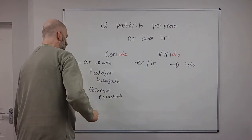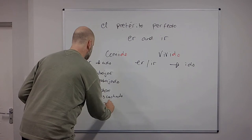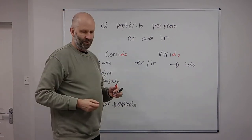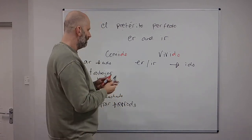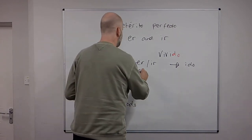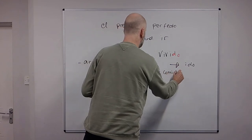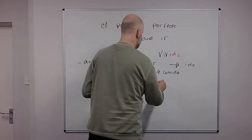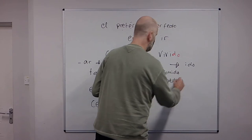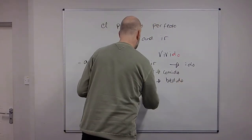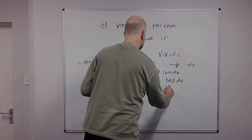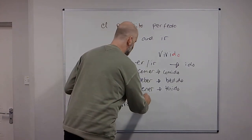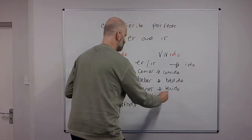We've already seen hablado. Cerrar, to close, becomes cerrado. And ER and IR verbs: if we look at ER, we've already seen comer becomes comido. What else do we have? Beber, to drink, drunk is bebido. And tener, to have, becomes tenido.